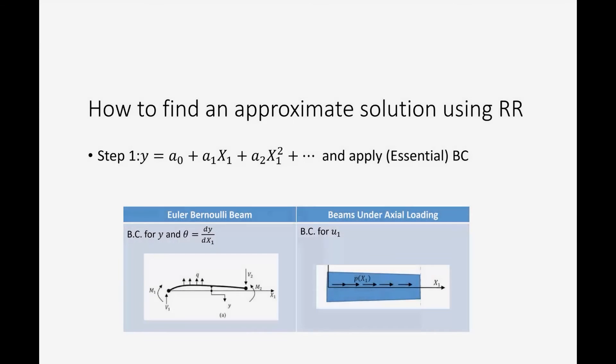We're going to apply the Rayleigh-Ritz method to two types of beams: the Euler-Bernoulli beam and beams under axial load. For each, the first step is the same — assume a polynomial for the unknown displacement. For the Euler-Bernoulli beam the displacement is the vertical or lateral displacement. For beams under axial load it's the horizontal displacement.